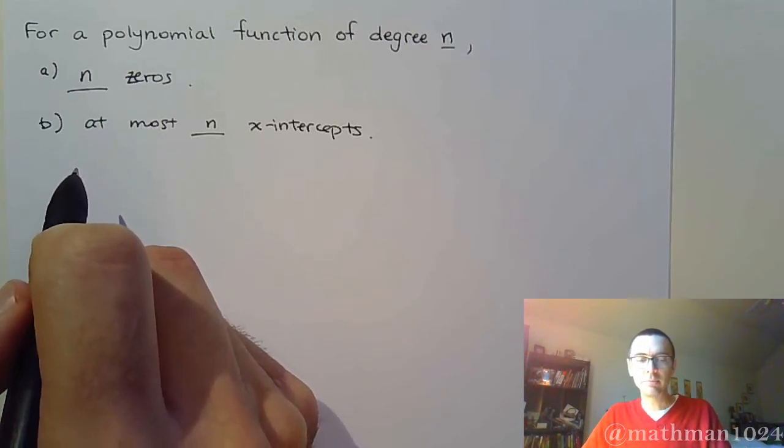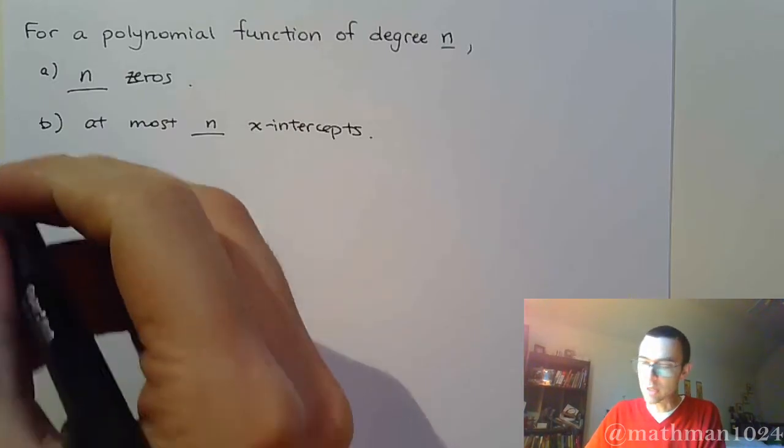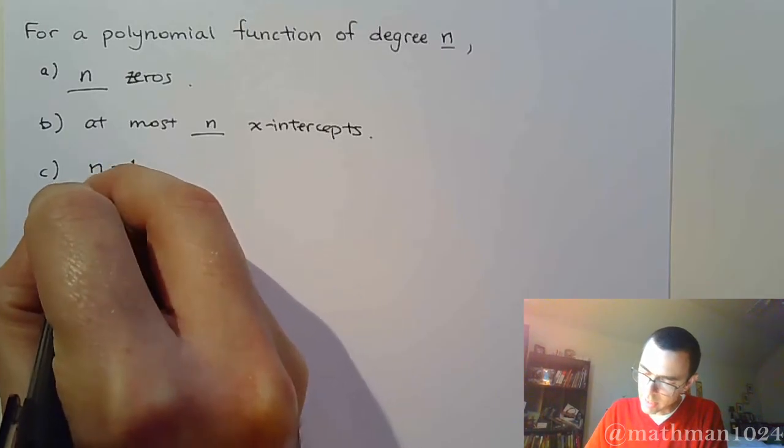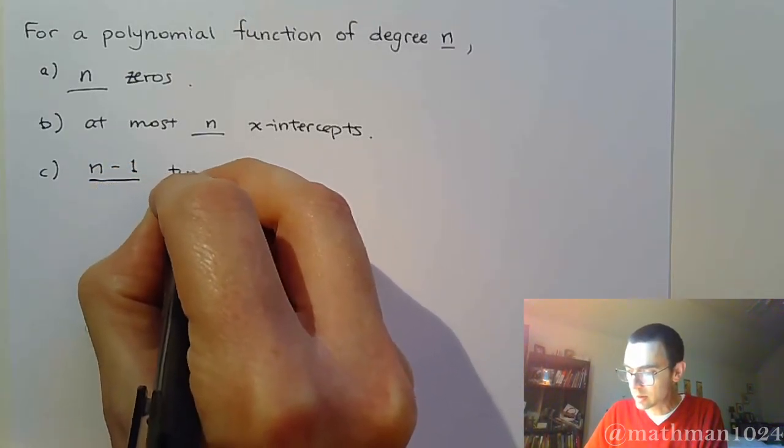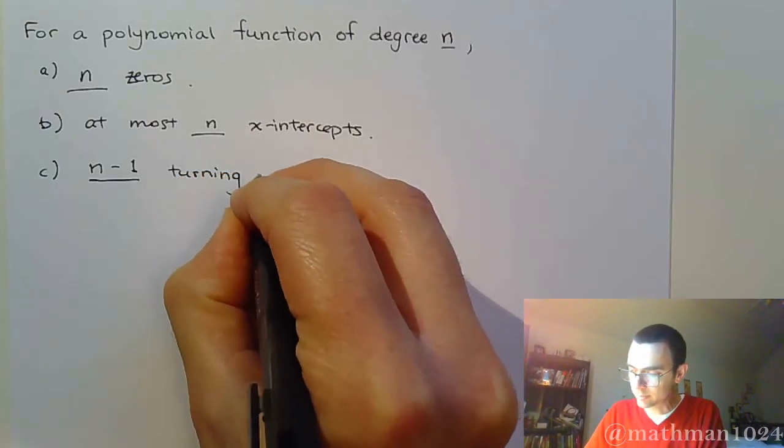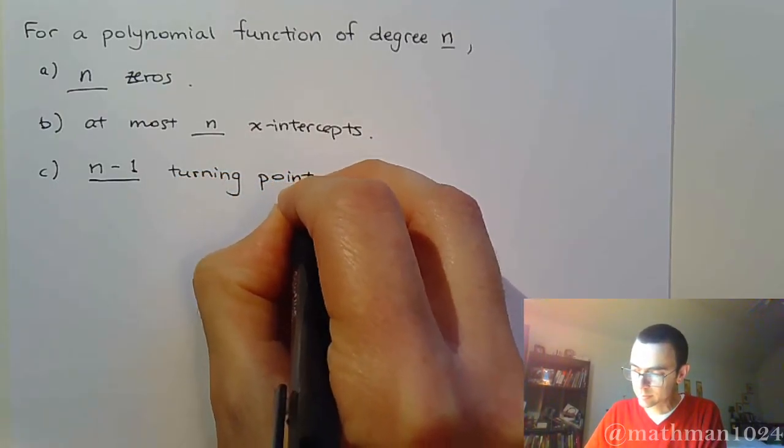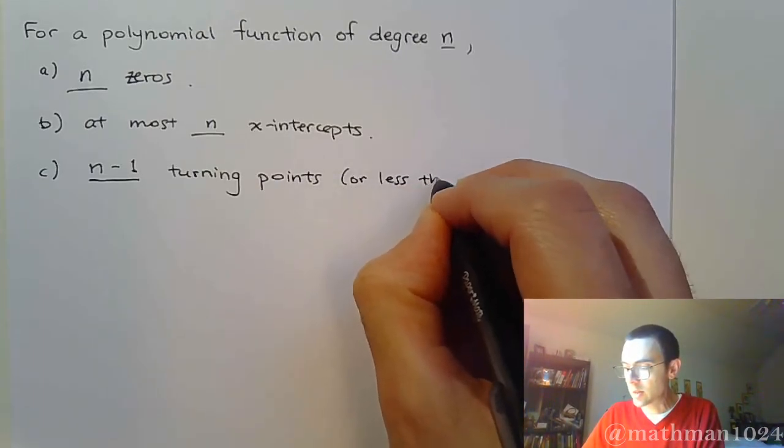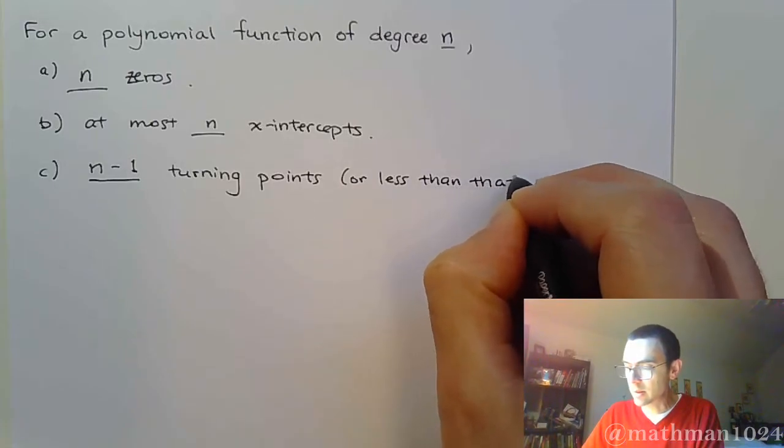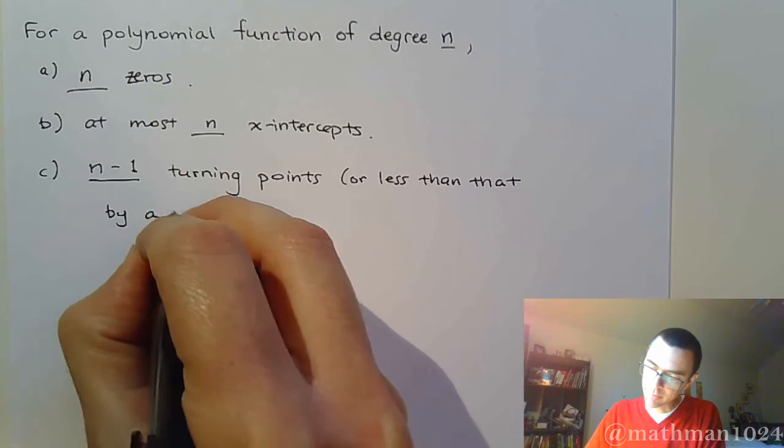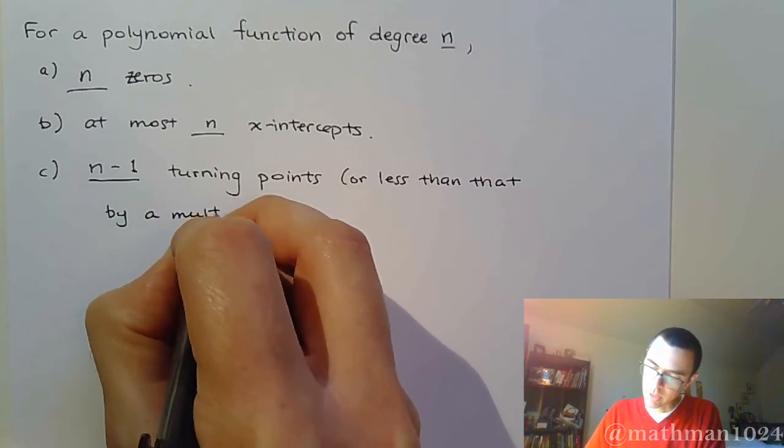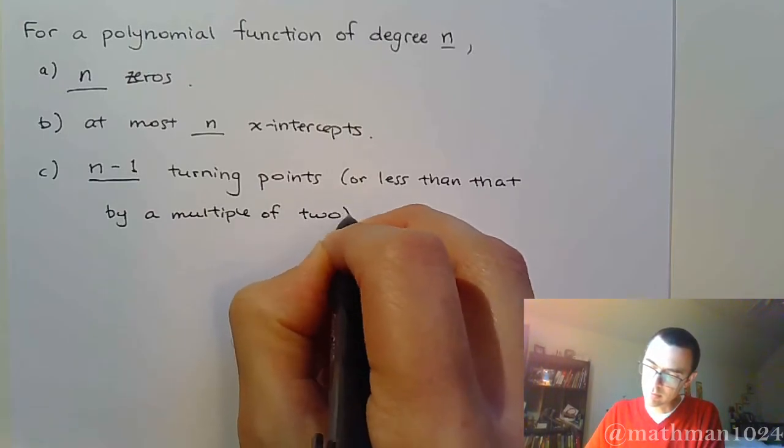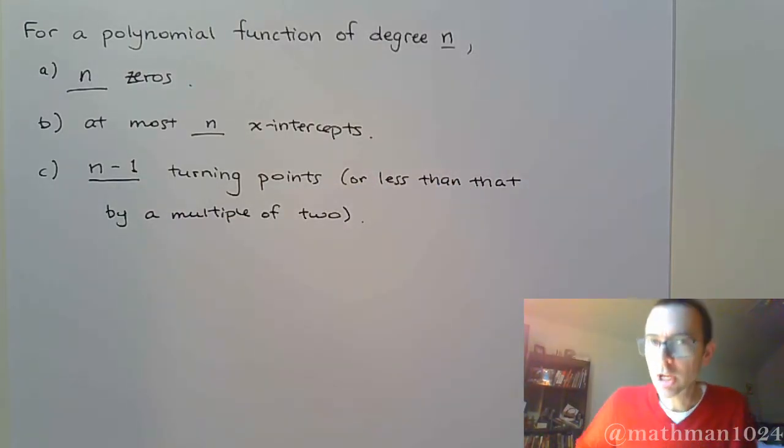And we're going to have, at most, n minus 1 turning points, or less than that by a multiple of 2. So, real quickly, let's talk about what this means.